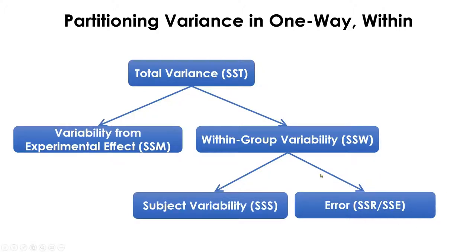This error term is used as SSR in calculating the F ratio against SSM, which is the model sum of squares. In one-way within-subject ANOVA, the total variance and the model sum of squares is actually the same. This error term is further partitioned to take away the subject variability because in each condition the subjects are the same individuals, so you want to remove the extra variability coming from the subjects.